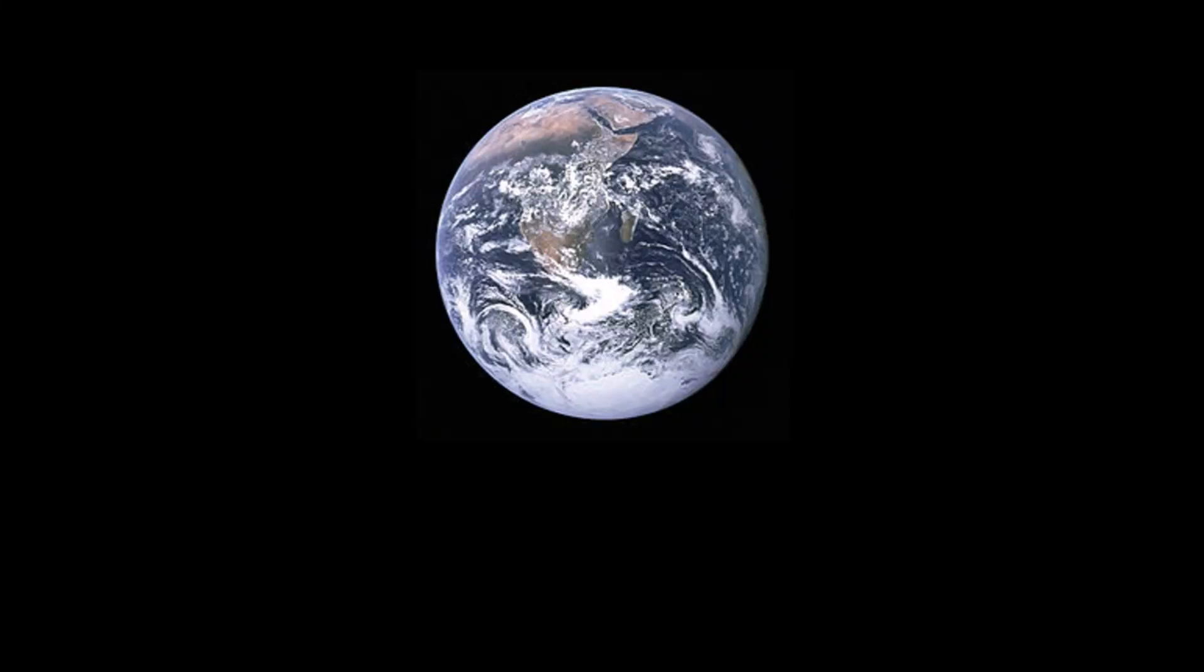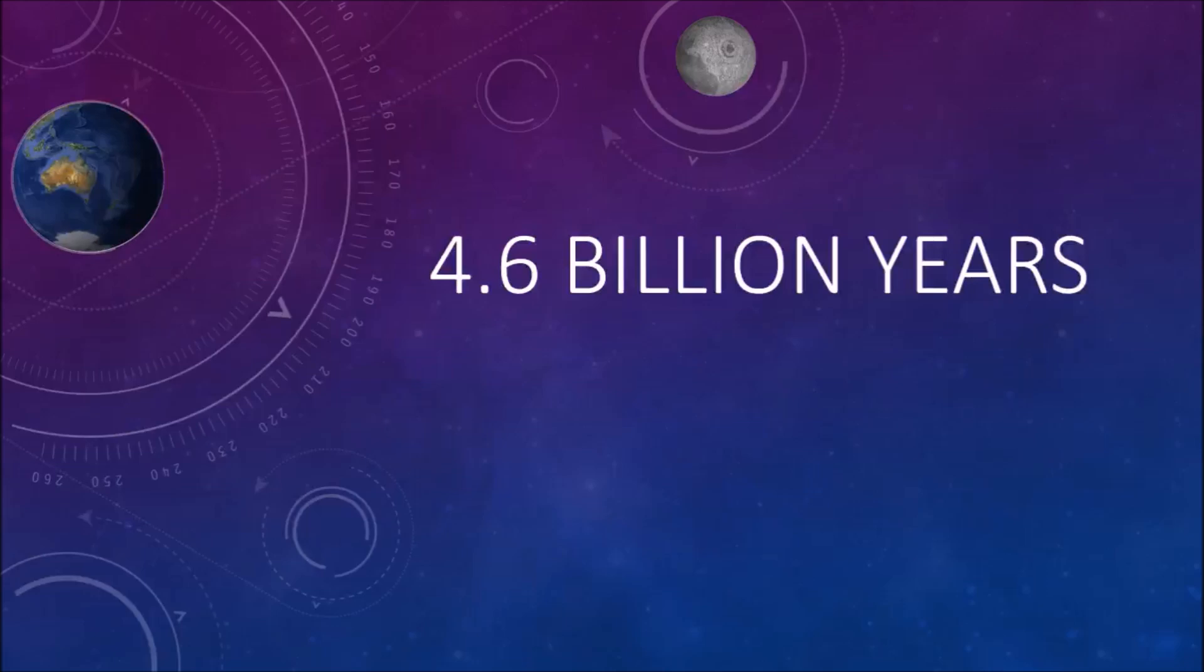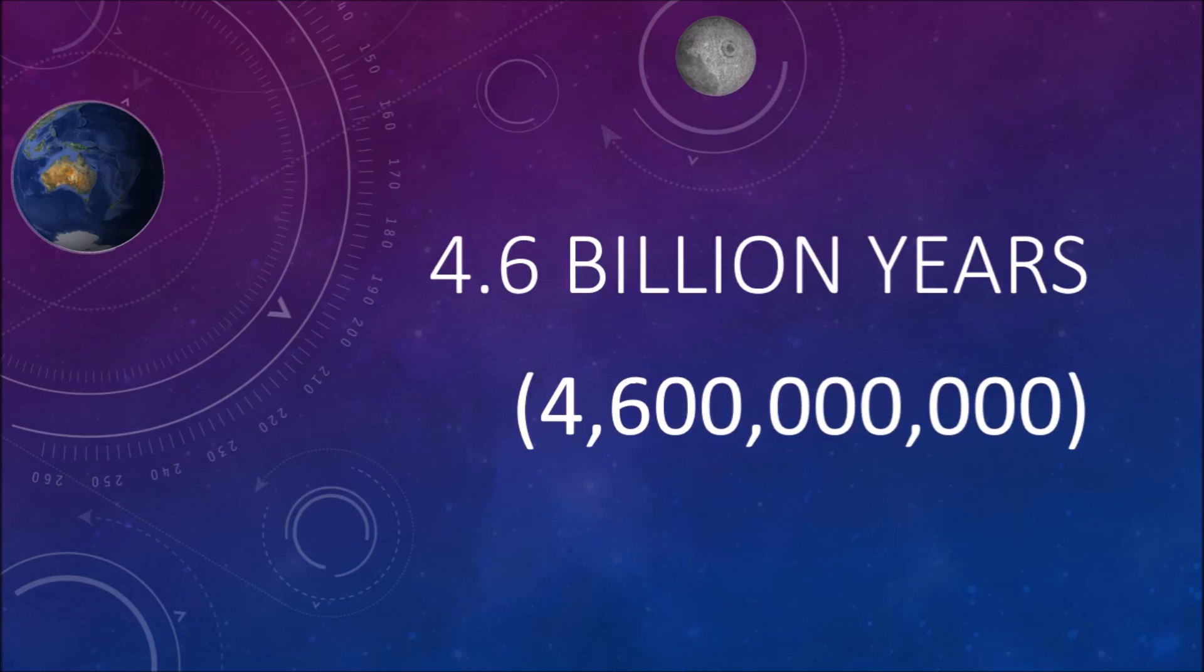Have you ever thought about how old the earth is? This planet we live on hasn't been around forever, but it's still incredibly ancient. It is actually 4.6 billion years old. That's a 4, then a 6, then 8 zeros. It's a lot of time.